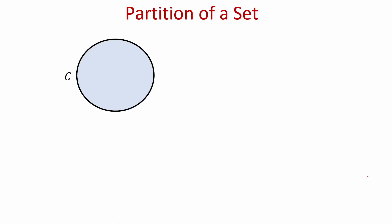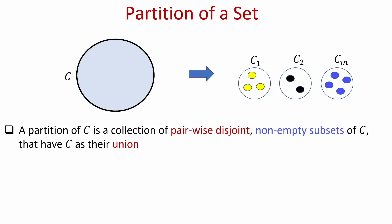So let us start with the definition of a partition of a set. Imagine you are given a set C which may be finite or infinite. The partition is basically a collection of pairwise disjoint non-empty subsets of C — say M subsets — which are pairwise disjoint such that if you take their union you get back the original set C. Intuitively, for example, you have the map of India: the various states of India partition the entire country into various subsets such that there is no intersection among the states.